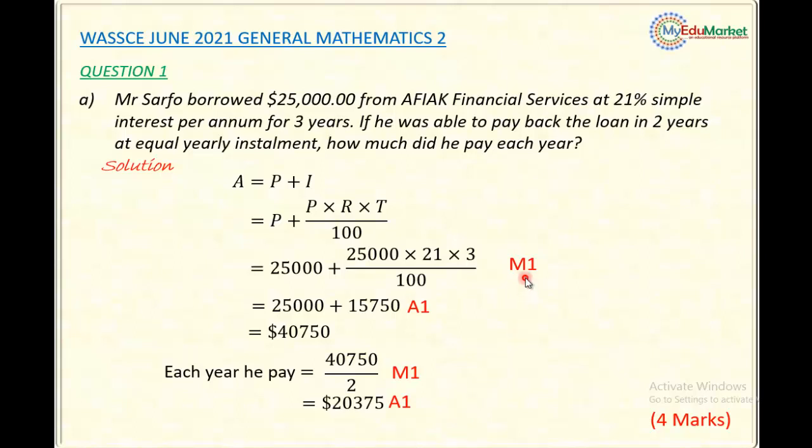First, I have the M1 mark, meaning the method mark, for finding the interest. This is where I have the interest: I substituted in the formula for finding the interest, $25,000 times 21 times 3 divided by 100. For substituting this correctly, I now have M1 mark, meaning method mark. For calculating the interest, that is $15,750, I have the accuracy mark, that is the A1 mark.